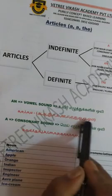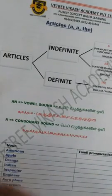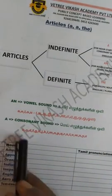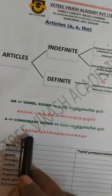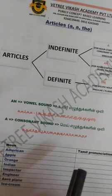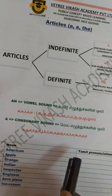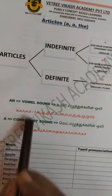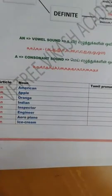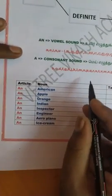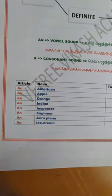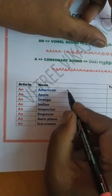From this, if a word starts with a vowel sound we use 'An'. For example — the word 'American'. This is how we identify the starting sound. American — what sound does it start with? Let's check in Tamil.